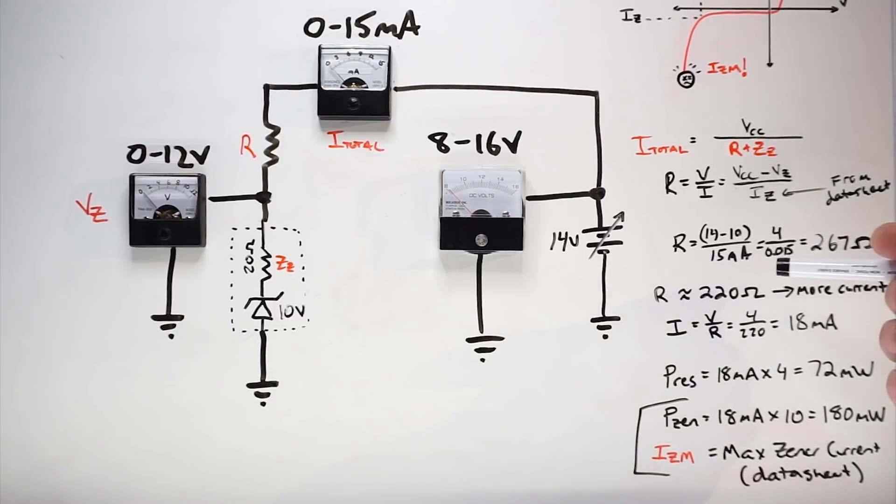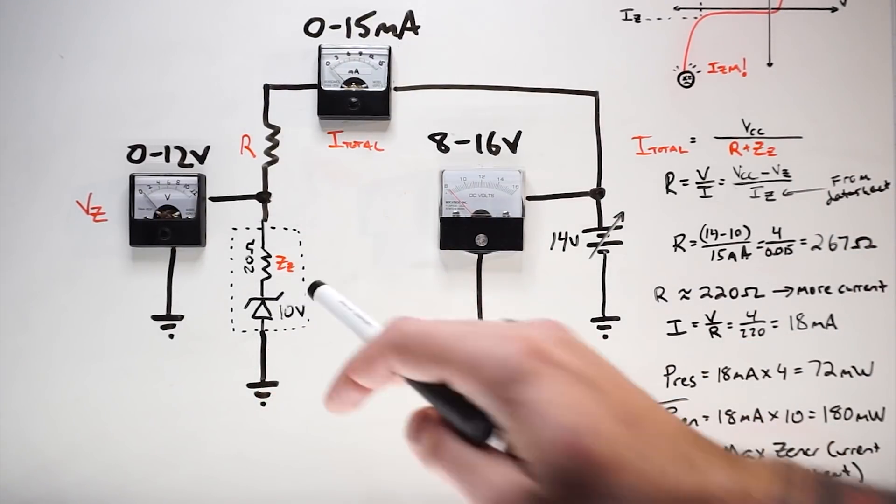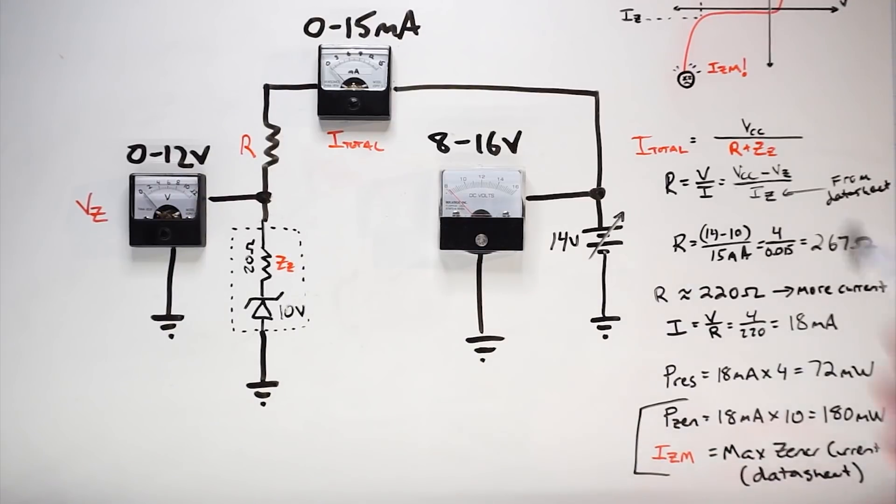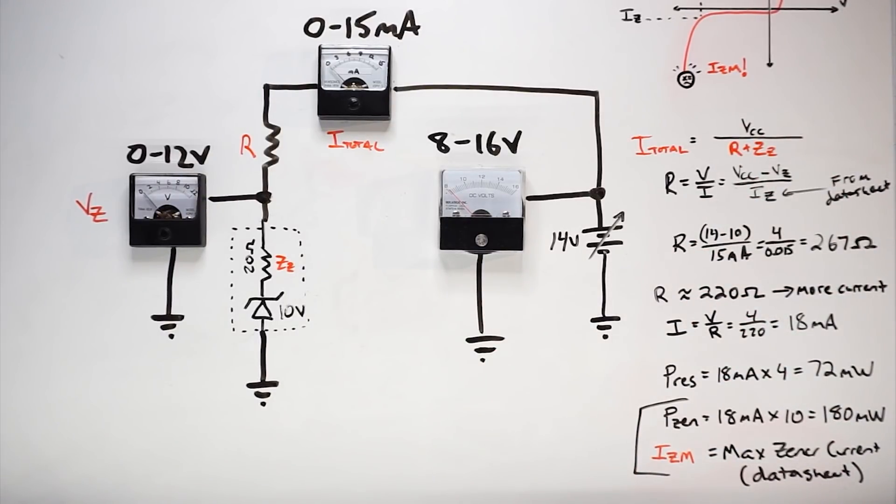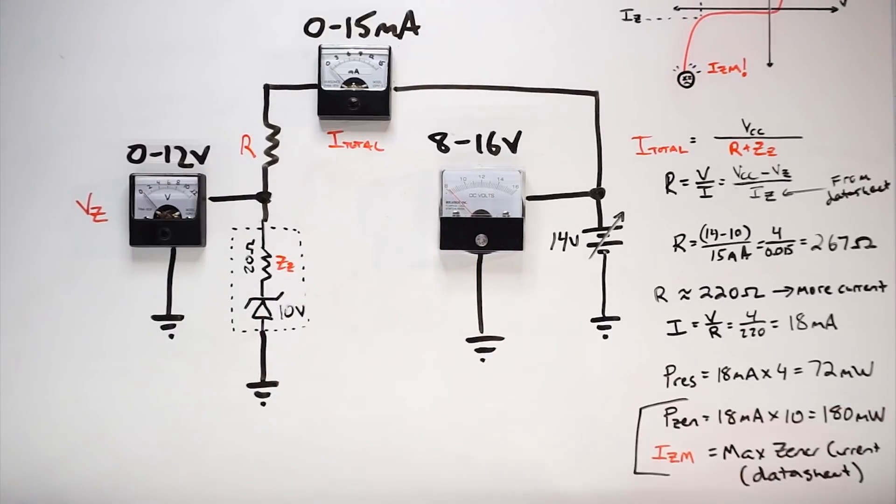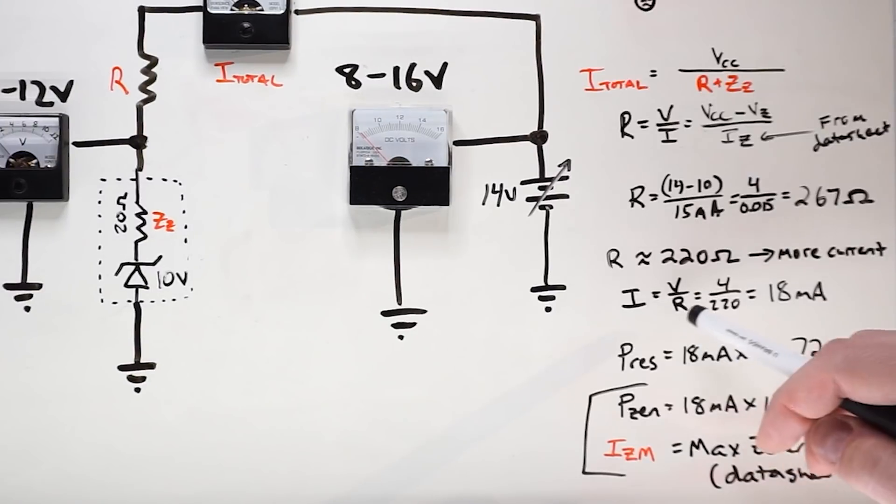So for that current, neglecting this 20 ohms of the Zener impedance, and that comes from the datasheet, it could range from 20 ohms to 200 ohms. So consult your datasheet, but I'm neglecting this right now because it doesn't really impact this that much. So 4 divided by 15 milliamps, 267. I'm going to go down in value, which is going to increase my current and push me a little closer here to this linear region. Current equals 4 divided by 220. I'm going to recalculate that 15 milliamps I got with this new resistor. That's 18 milliamps.